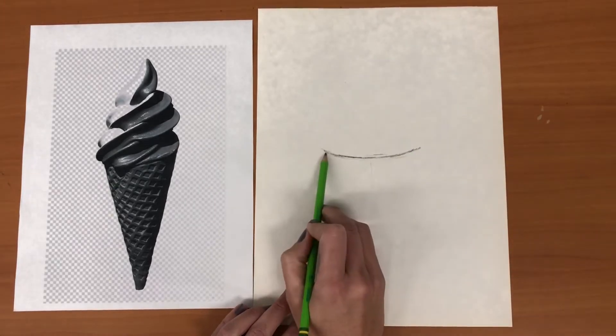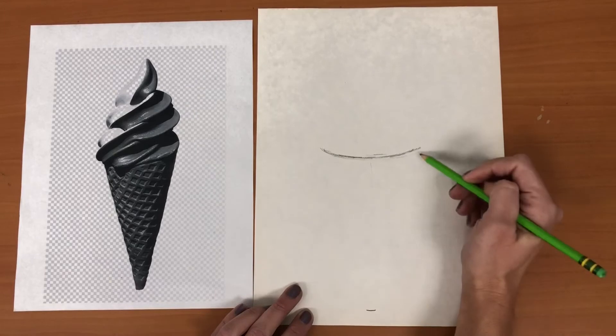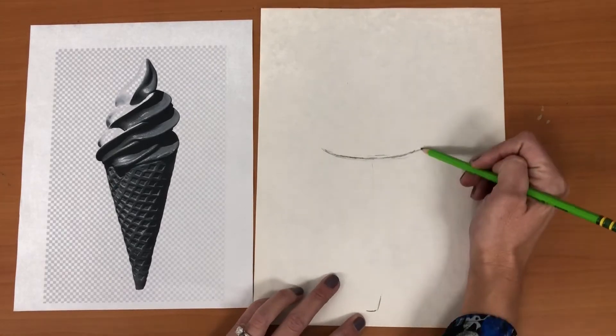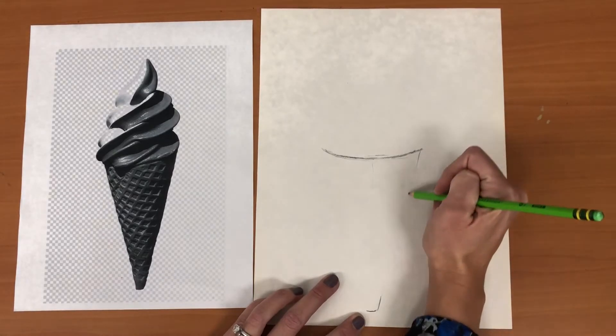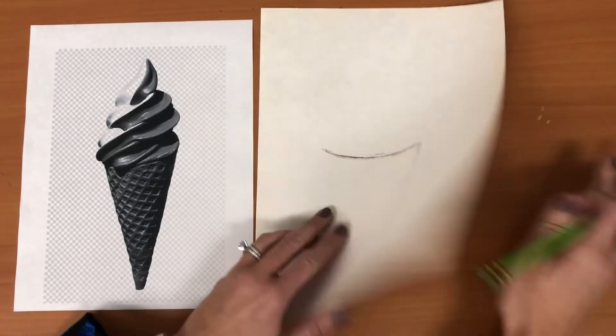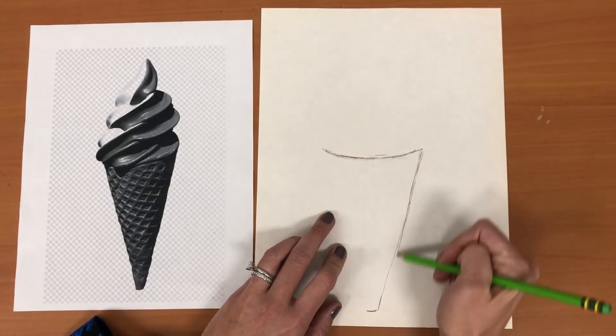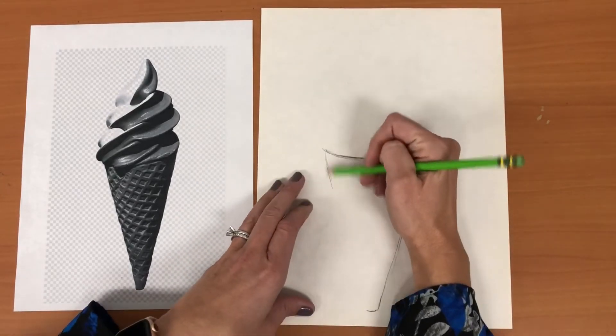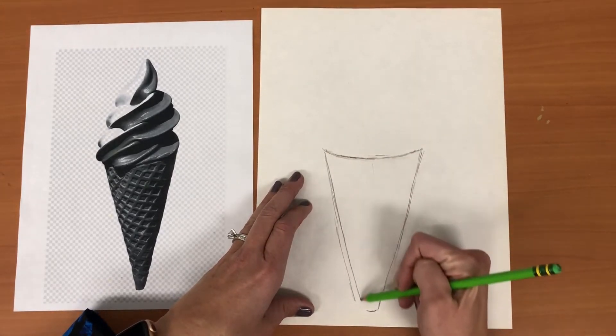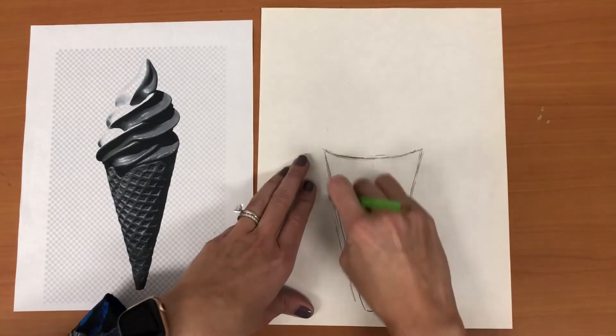Okay now I'm holding my pencil nice and loose and I'm creating a sketchy outline. You don't want to just draw one hard line you want to sketch your lines nice and light nice and soft so that you can erase them and adjust them as you need to.